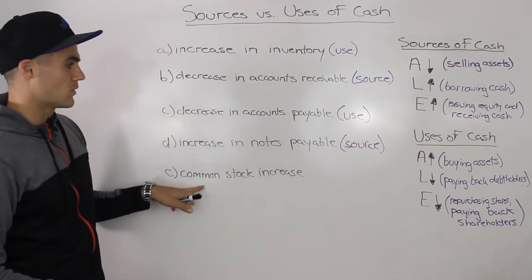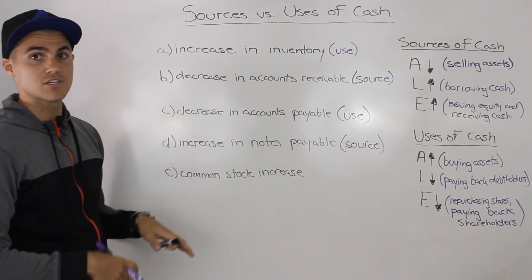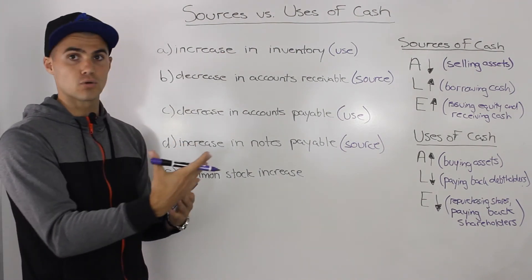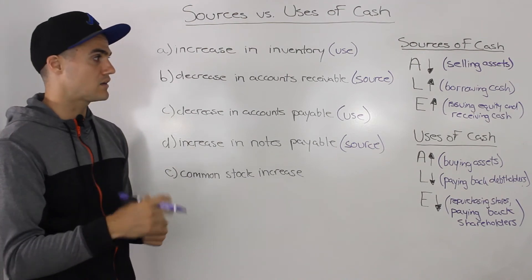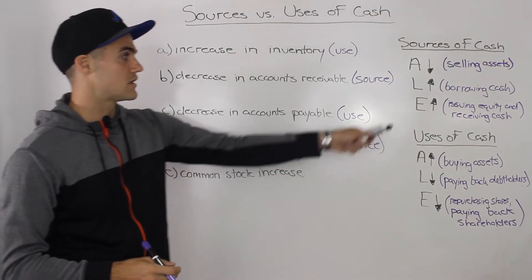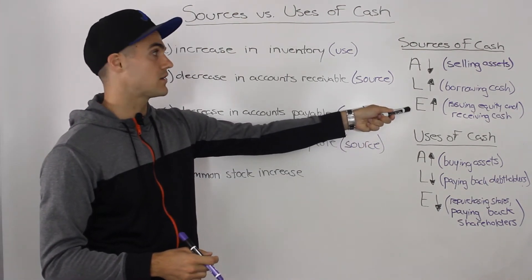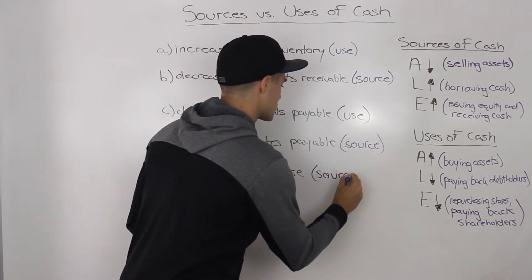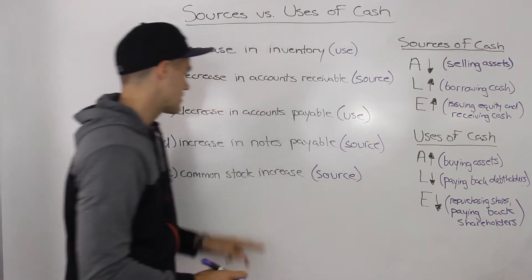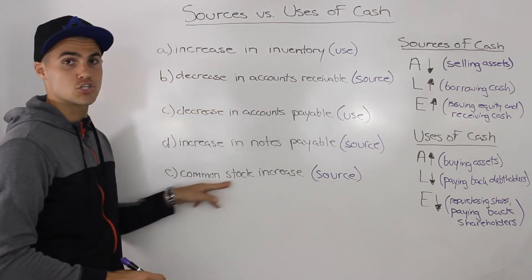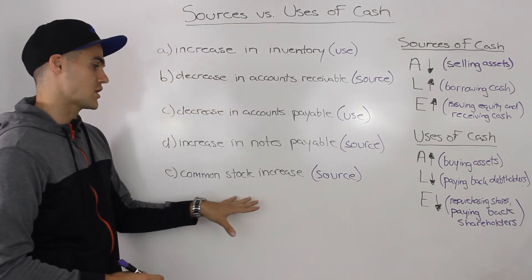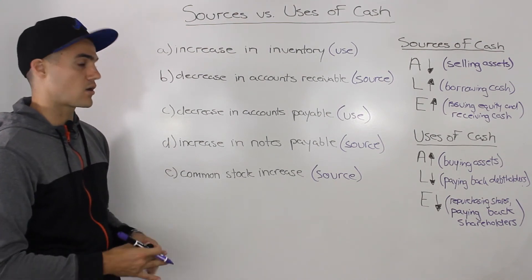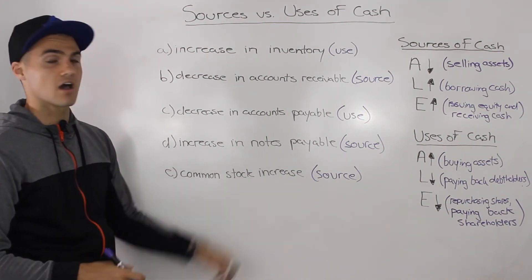Scenario E: a common stock increase. That means your equity account is going up, meaning that you are receiving money from shareholders. So that is a source of cash. Another way this could be worded is issuing equity or issuing shares — that is the same thing as your common stock increasing. All represent sources of cash.